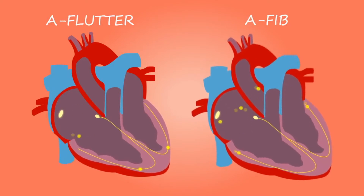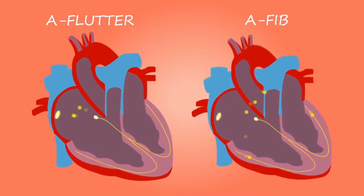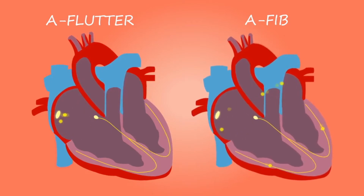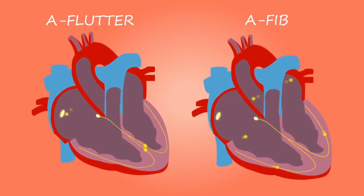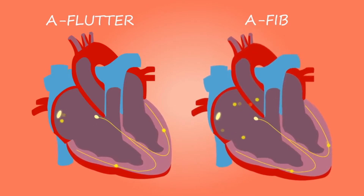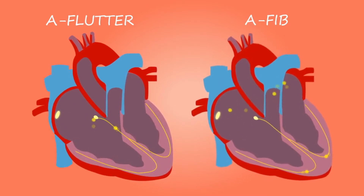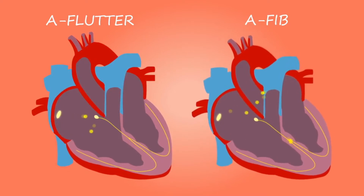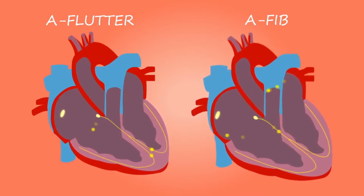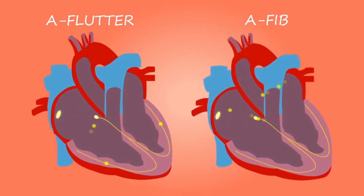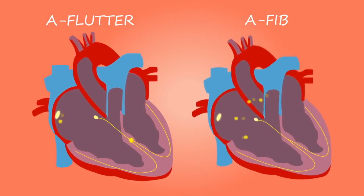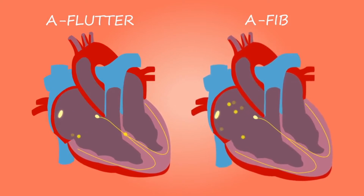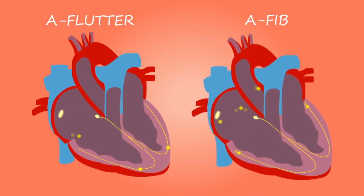When EMS uses Cardizem, we're mainly using it for two cardiac rhythms — two dysrhythmias. So if you see a flutter or a fib on the monitor and they are stable patients, however their rate is too fast, we are going to be giving Cardizem to try and help assist fixing this.